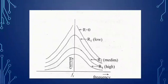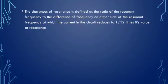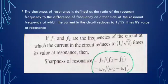The resonance curve shows current versus frequency for different values of resistance. As resistance decreases, the resonance curve becomes sharper. The sharpness of resonance is defined as the ratio of the resonant frequency to the bandwidth — the difference of frequencies on either side of resonant frequency at which the current reduces to 1/√2 times its value at resonance. If F₁ and F₂ are those frequencies, sharpness = F_R/(F₂ − F₁) = ω_R/(ω₂ − ω₁).